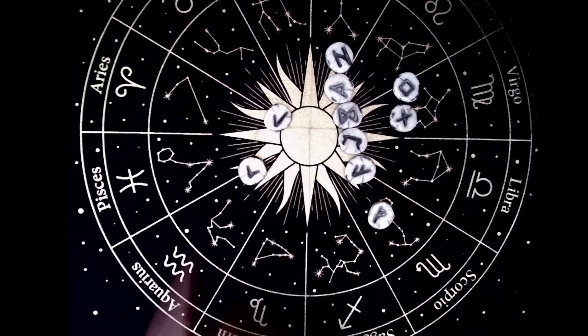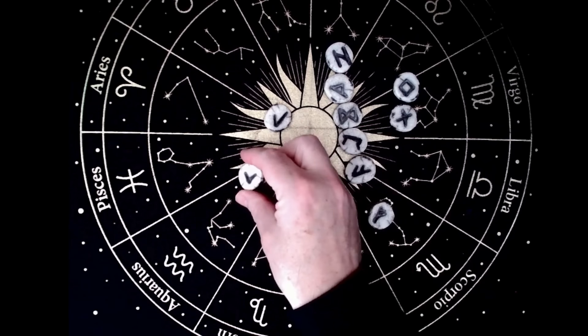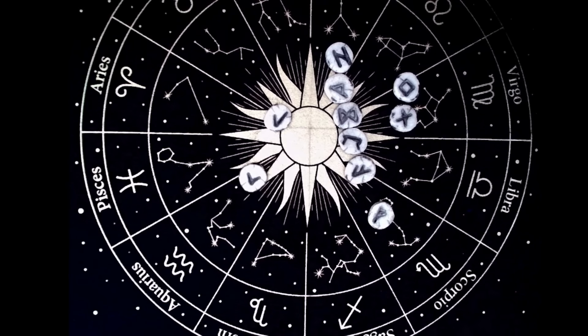Alors, je commence directement par Kenaz. Kenaz, c'est cette rune ici. Kenaz nous montre une aptitude à manipuler les énergies sur plusieurs plans. Kenaz, c'est l'idée de quelque chose au travail.